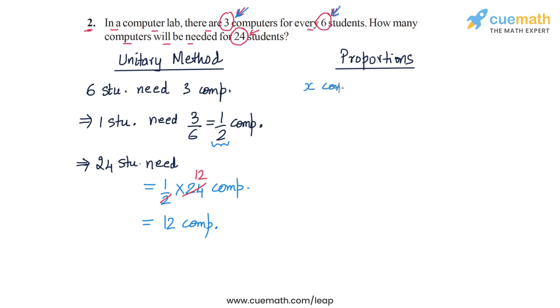So x computers are needed for 24 students. So we form a simple proportion. The proportion is: 3 computers is to x computers will be the same as 6 students is to 24 students.